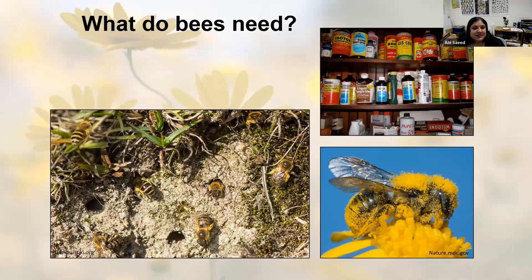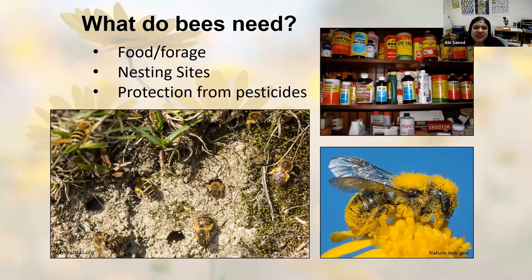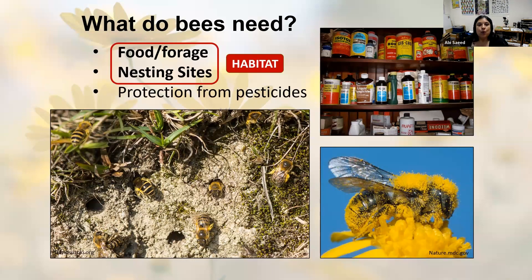What do bees need? Similar to humans, bees need three main things: food or forage, a place to live, and protection or safety. For bees specifically, that means food, nesting sites, and protection from pesticides. Those are the three main things bees need to survive and thrive in a landscape. When talking about pollinator habitat, this usually encompasses both food and nesting sites, so I'll lump those together when I talk about habitat.